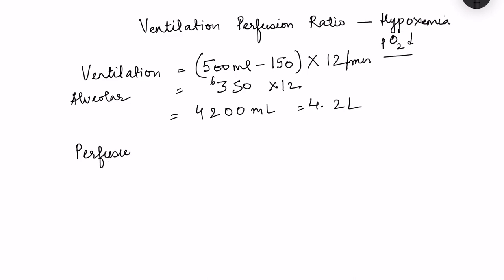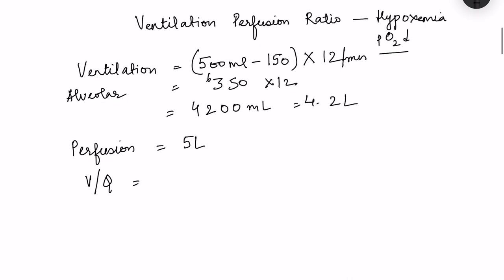Normal perfusion of the lungs equals the total cardiac output, because the right ventricle sends the full cardiac output to the lungs — so perfusion is 5 liters. If we calculate the ventilation-perfusion ratio using total alveolar ventilation divided by total perfusion, it is 4.2 / 5 = 0.8. That is the VQ ratio of the whole lung.